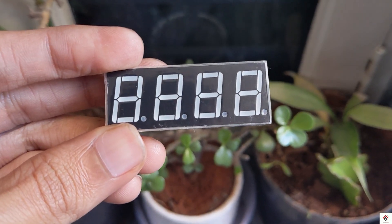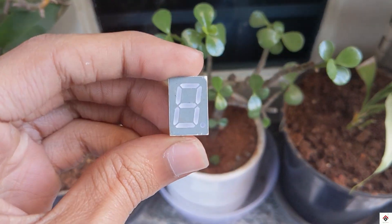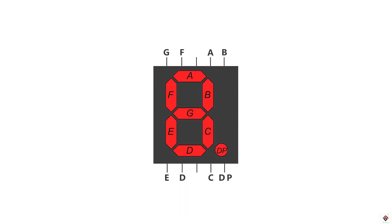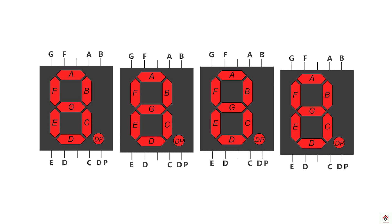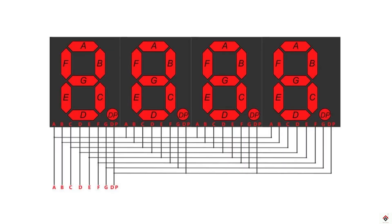First we'll try to understand the concept behind the four digit display. If we consider a single digit seven segment display, it has seven segment pins from A to G and one common pin or ground. Theoretically, to make a four digit display we have to combine four individual displays, which would give 28 segment pins, making the code and circuit connections very complex. As a solution, displays available in the market use multiplexing, combining the segment pins of all individual displays into just seven pins from A to G.